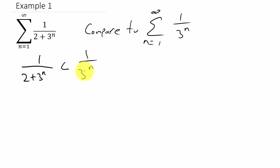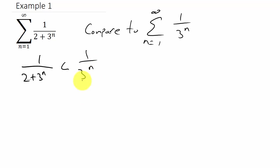That makes sense because, with n going from 1 to infinity, the denominator (2 plus 3 to the n) is always going to be larger than 3 to the n alone — we have 3 to the n on both, but this one adds 2 to each result. Since the denominator is larger, the whole fraction is smaller. This holds for n greater than or equal to 1.